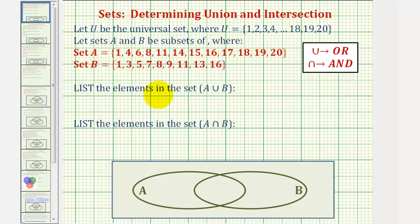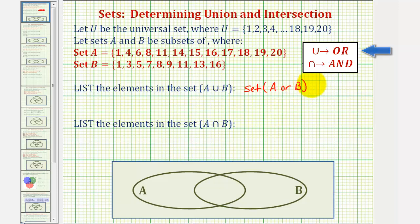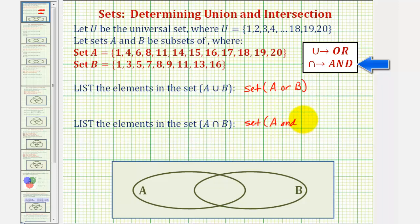We want to list the elements in set A union B. Remember, union means 'or', so we can also think of this as the set of elements that are in set A or set B. We also want to give the elements in set A intersect B, which we can think of as the set of elements that are in A and B.